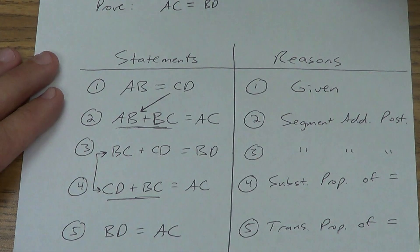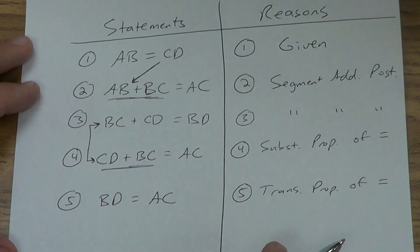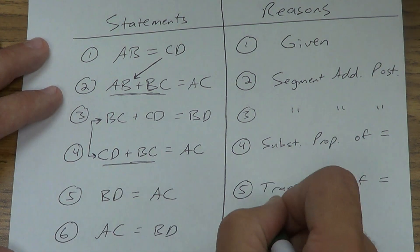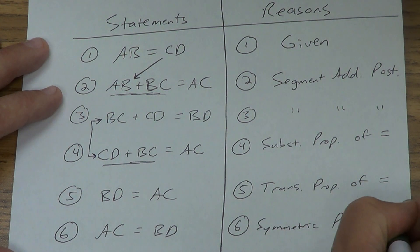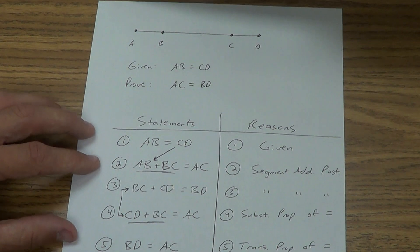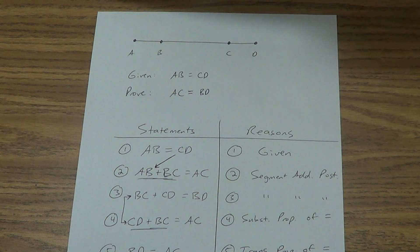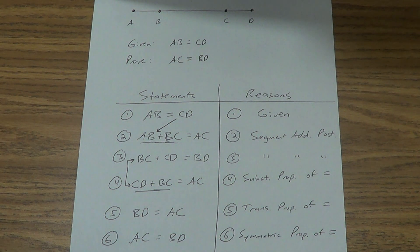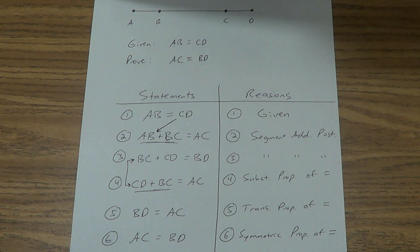That's what we were trying to prove: AC equals BD. If you want it in the same order, we can do one more step — AC equals BD using the symmetric property of equality, where you flip it. This is tougher and more complicated, but this is what we'll be doing with two-column proofs. It will get easier the more practice you do on your own. This is the application of 2.5 — make sure you've watched both videos. We'll see you in class.